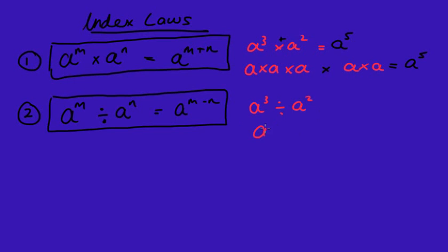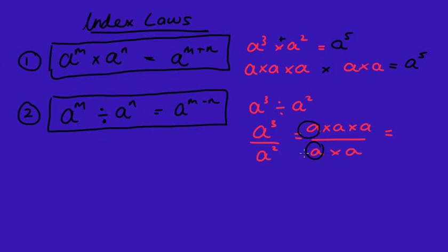I'm going to rewrite that with the division sign as a fraction. a cubed means a times a times a; a squared means a times a. To simplify, just like ten divided by ten equals one, a divided by a also equals one — whenever you divide something by itself the answer is always one. So a divided by a equals one, and you can replace it with a one if you wish, because one times one times a just leaves you with a.